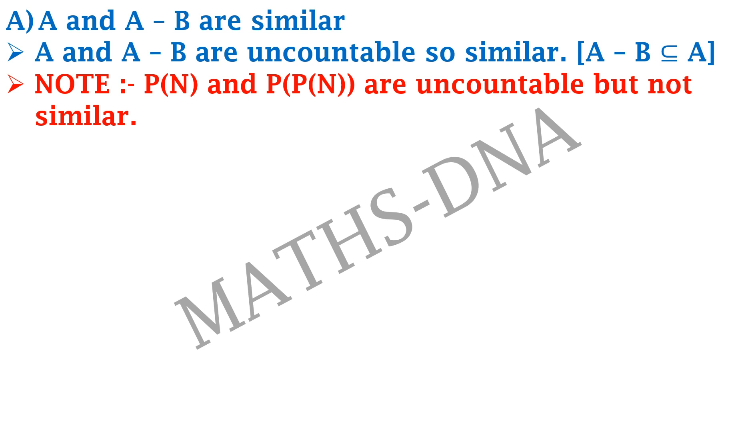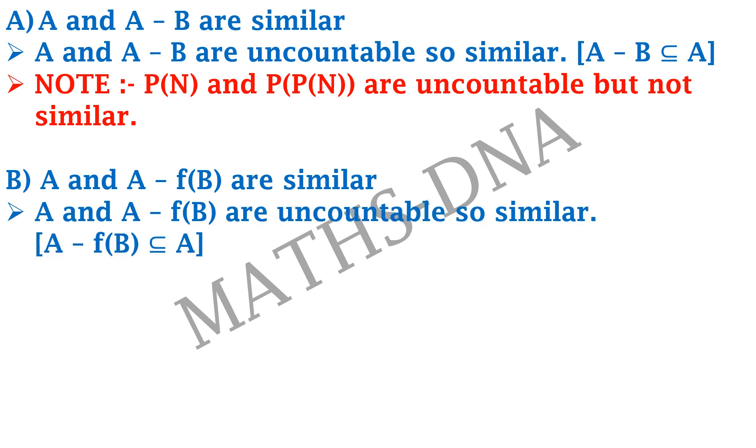Second option: A and A minus F(B) are similar. F(B) is nothing but again B because they both have same cardinality. It is nothing but the range of B, so again they are uncountable and they are similar, and A minus F(B) is a subset of A itself.